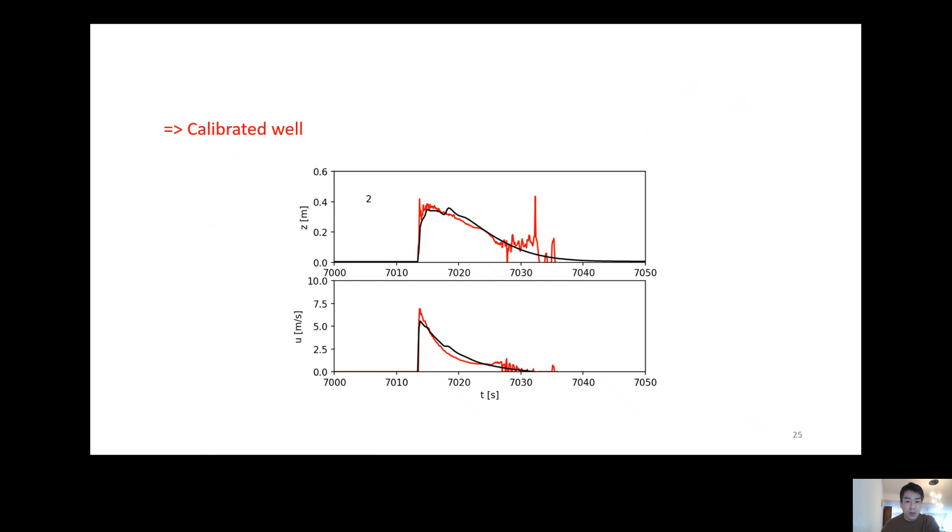When we look at the details of this figure, we can realize that the tail of the flow depth has some fluctuation. This is actually due to the fact that we used modified dynamic boundary conditions in this study. When the layer becomes very thin, the particle becomes unstable.